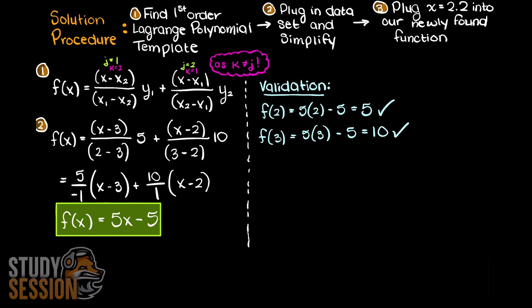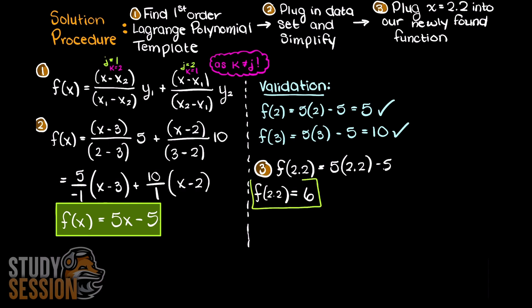As you can see, we have returned our outputs as expected. Lastly, we just need to plug in the input of 2.2 into our function. This gives us an output of 6, which is the solution to the question we were initially asked.